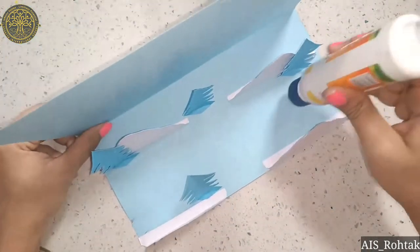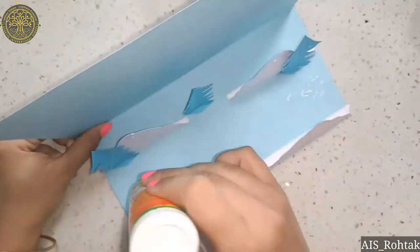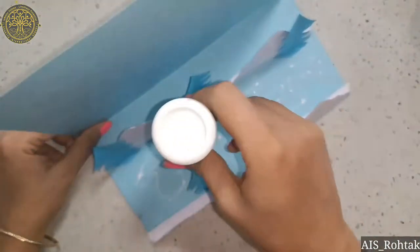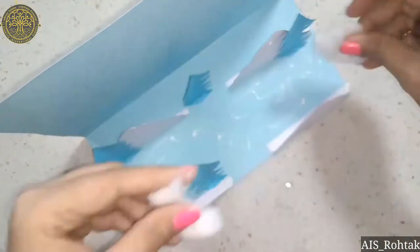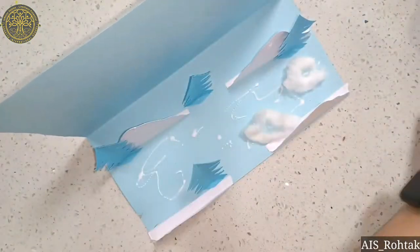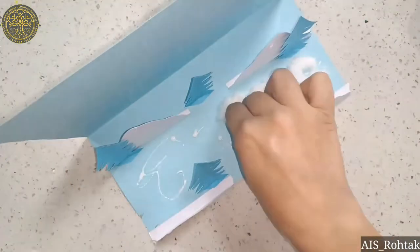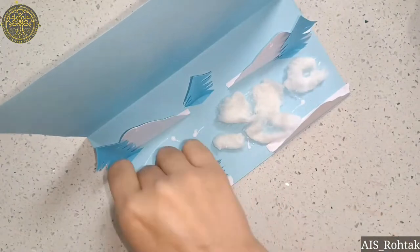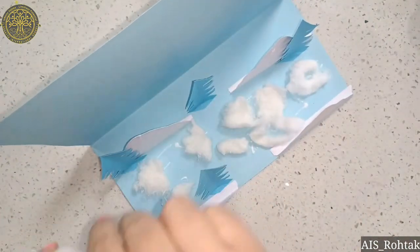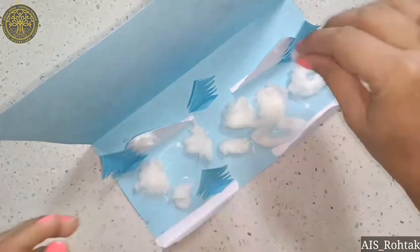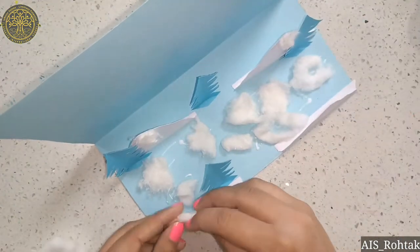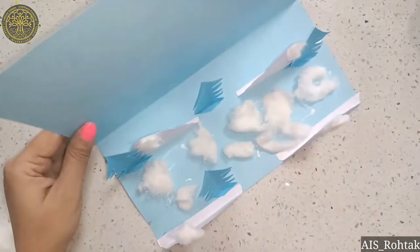It will look like this. Then we put glue on mountains and surface and paste some cotton. So the background is ready for polar region. Now we have to make the polar bear.